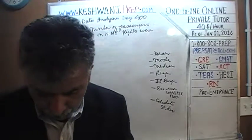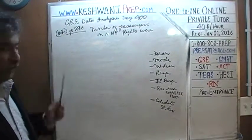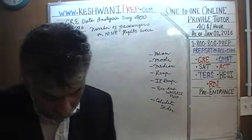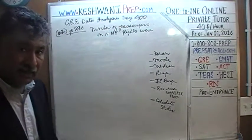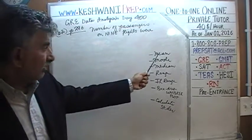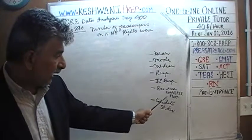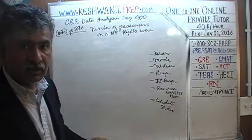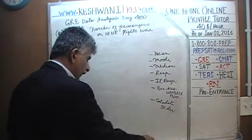Today we'll solve the problem on page 296, number 2. That problem in the book has three parts — A, B, and C. We're only going to do part A, but in the course of our work we're going to figure out the mean, the mode, the median, the range, the interquartile range, plot the box and whisker plot, and calculate the standard deviation — all for the data set of nine observations given to us.